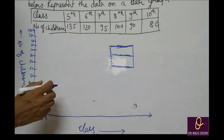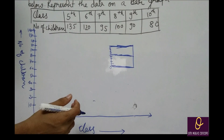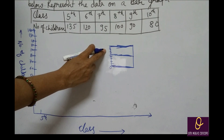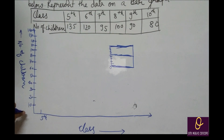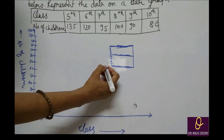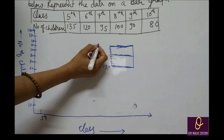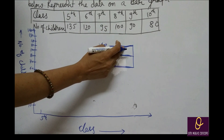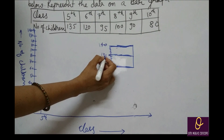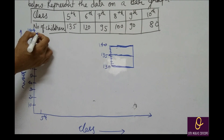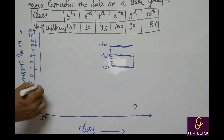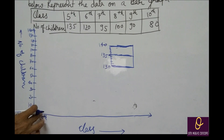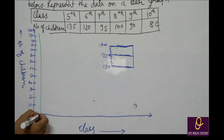अब scale देखते हैं. अगर 10 हो तो complete — next number. Row वाली लेनी है, 10 आपके पास आएगी. अब 135 लेना है. मान लो यह 130 है, यहाँ 140 है. 135 कहाँ होगा? 1, 2, 3, 4, 5 — जो light/dark line है, यह 135 हो गया. Graph paper में easily मिल जाएगा. यह 5th class के लिए.